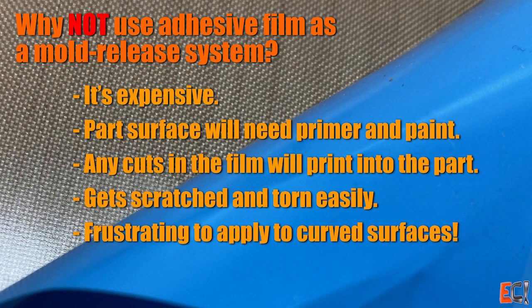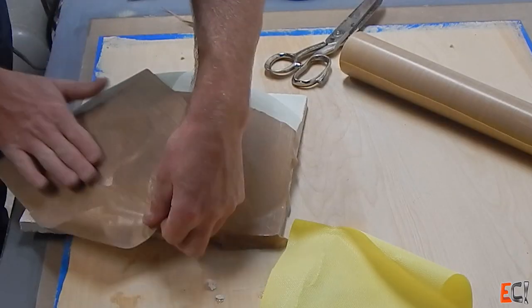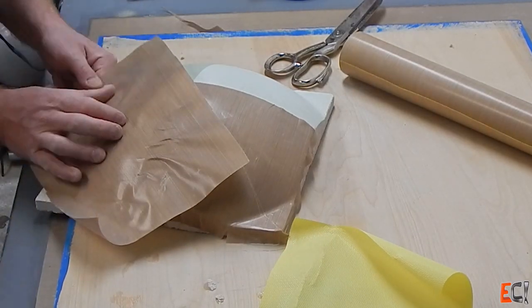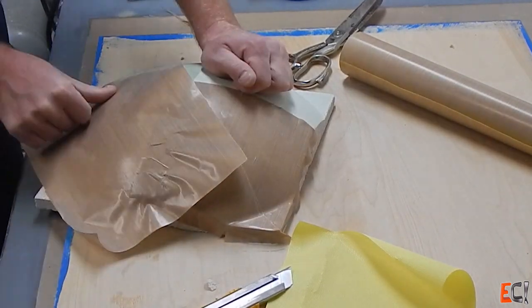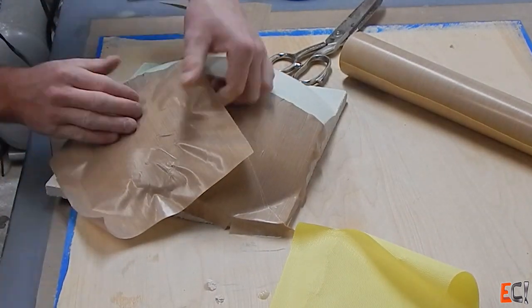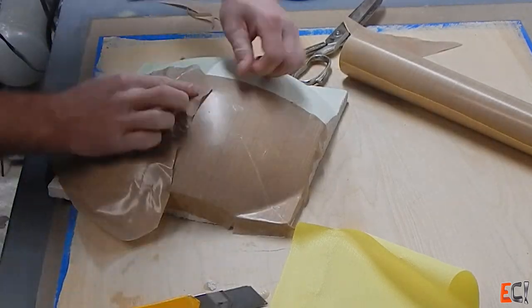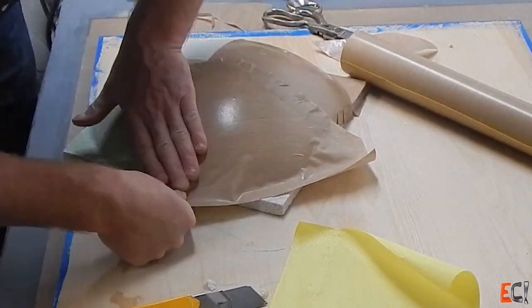The downsides are that it's expensive. You're going to need primer paint on the surface. It gets damaged easily, and as I'll show you now, it's super frustrating to put on curved surfaces, especially compound curved surfaces, like this partial sphere from my autoclaved aerated concrete test video.